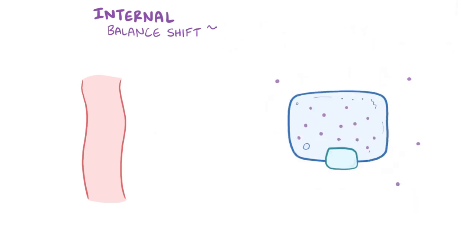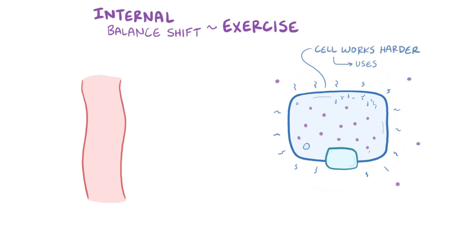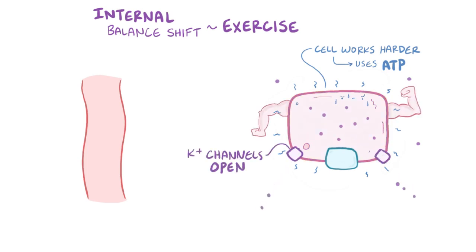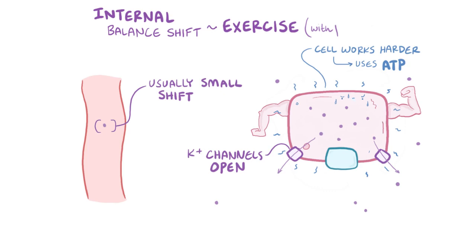A final example of internal potassium balance leading to hyperkalemia is exercise. During exercise, the body's cells work harder, consuming more cellular ATP — the molecular unit of energy currency. The depletion of ATP triggers potassium channels on the membrane of muscle cells to open, allowing potassium to move down its electrochemical gradient and out of the cell. Usually this shift is small, but if combined with beta-blockers or kidney issues, strenuous exercise can lead to hyperkalemia.